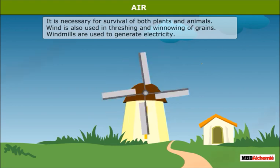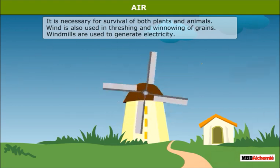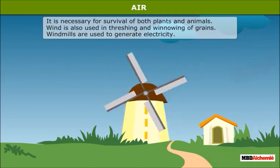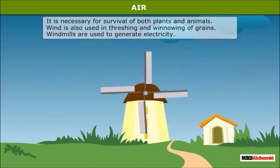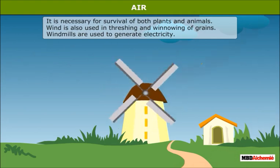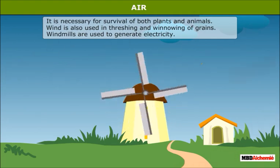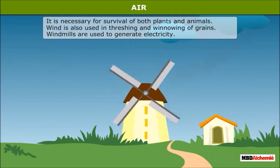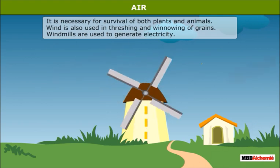Water is necessary for the survival of both plants and animals. Wind is also used in threshing and winnowing of grains, and windmills are used to generate electricity.